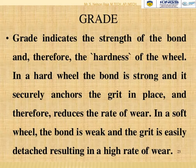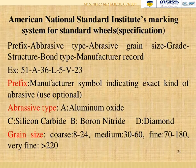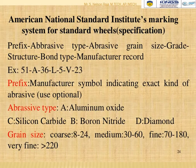The grade indicates the strength of the bond and therefore the hardness of the wheel. In a hard wheel the bond is strong and securely anchors the grain; in a soft wheel the bond is weak and the grain is easily detached, resulting in a higher rate of wheel wear. The American National Standard Institute (ANSI) marking system for standard wheels uses the format: prefix, abrasive type, grain size, grade, structure, bond type, and manufacturer record — for example, 51-A36L5V23.